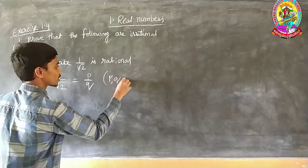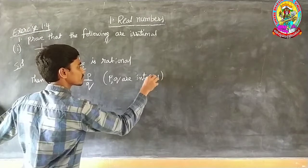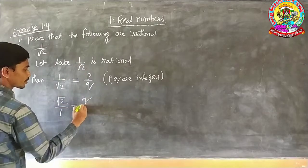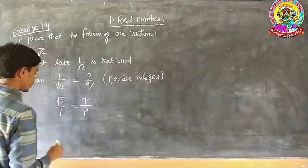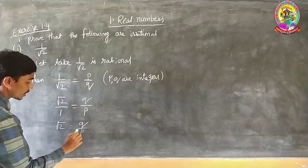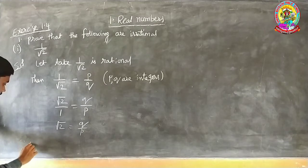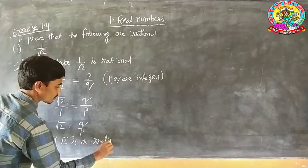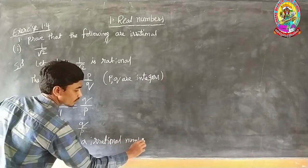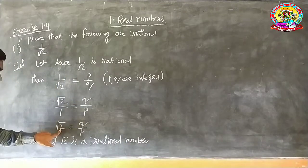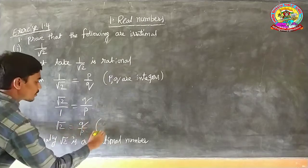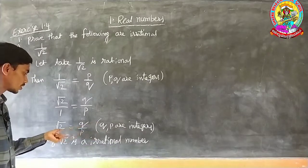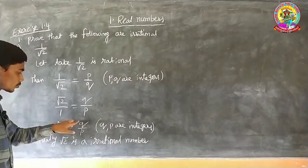Here P and Q are integers. Once we reverse the fraction, root 2 by 1 equals Q by P. Since P and Q are integers, root 2 equals Q by P. But root 2 is actually an irrational number. However from this we got that root 2 is a rational number, because it is possible to express it in the form of Q by P.